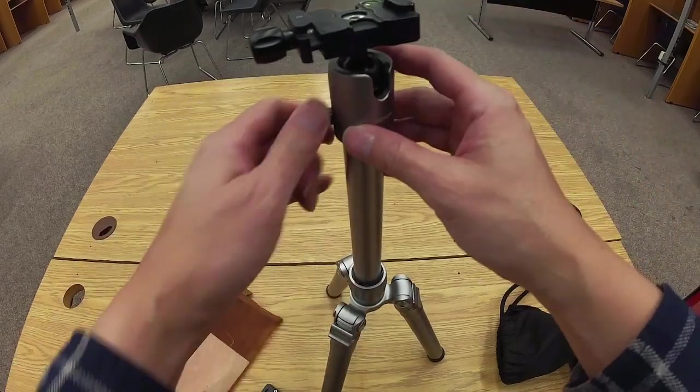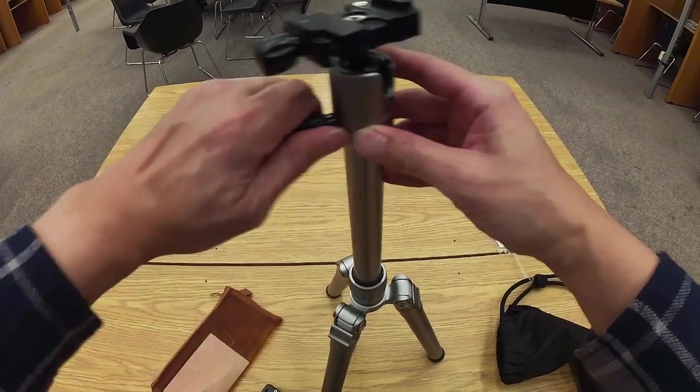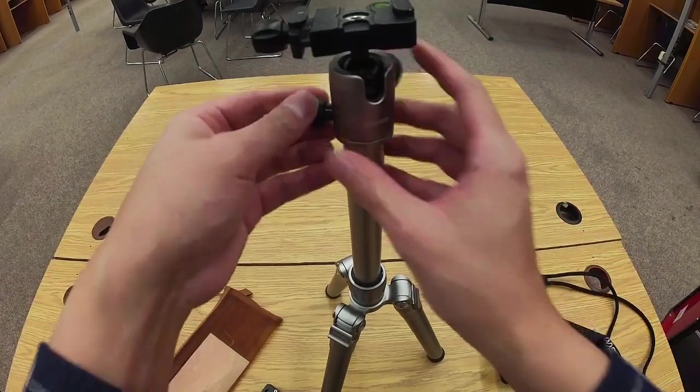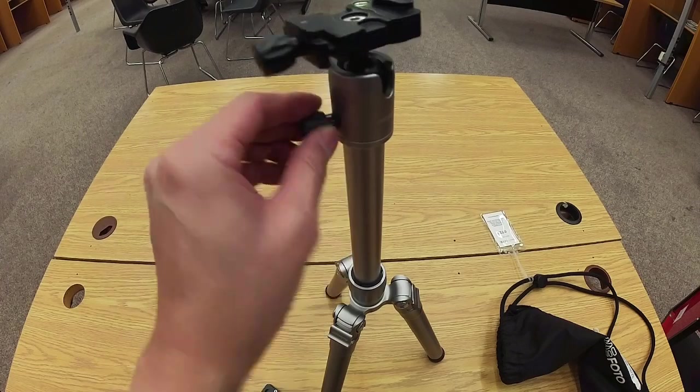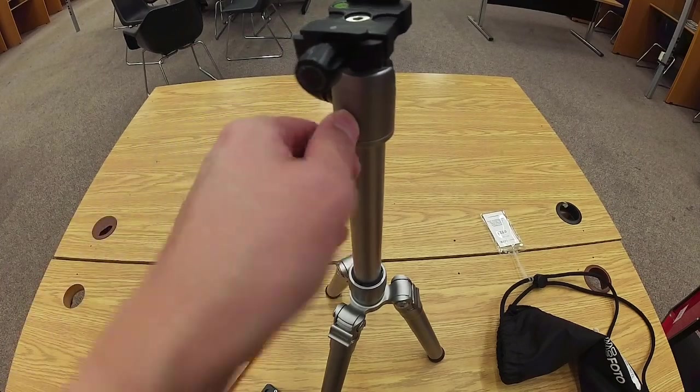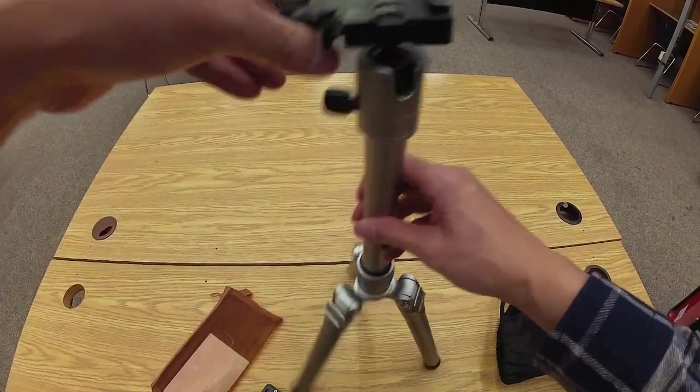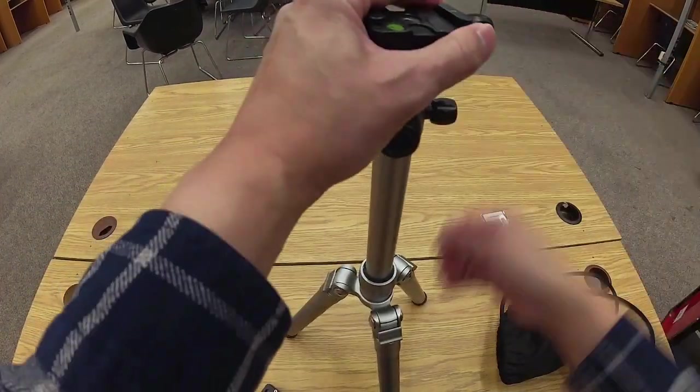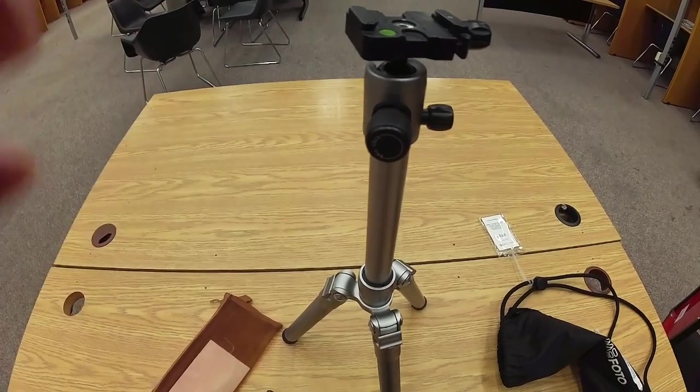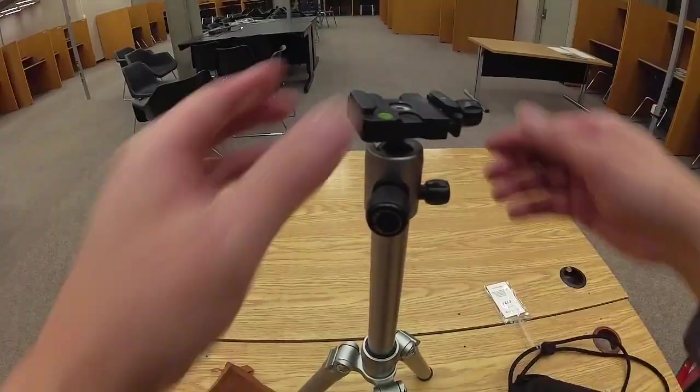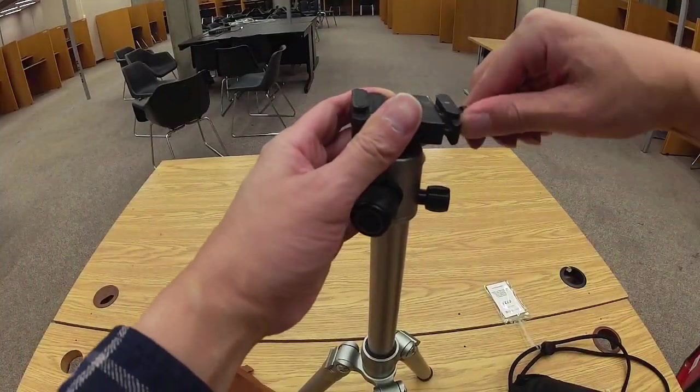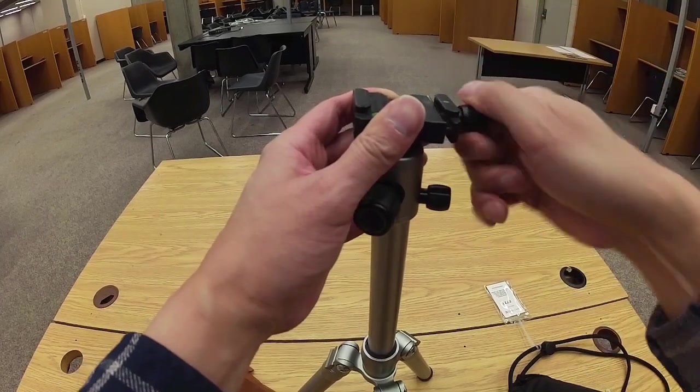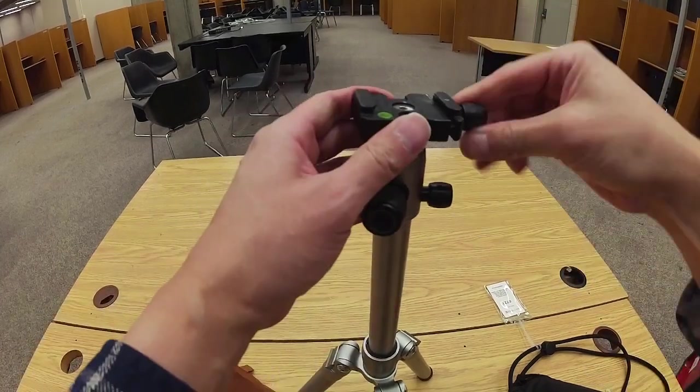And then this smaller knob allows you to rotate horizontally. And if you want to keep it in place, you just tighten the screw. And then this larger knob here allows you to tighten and loosen the mounting plate.